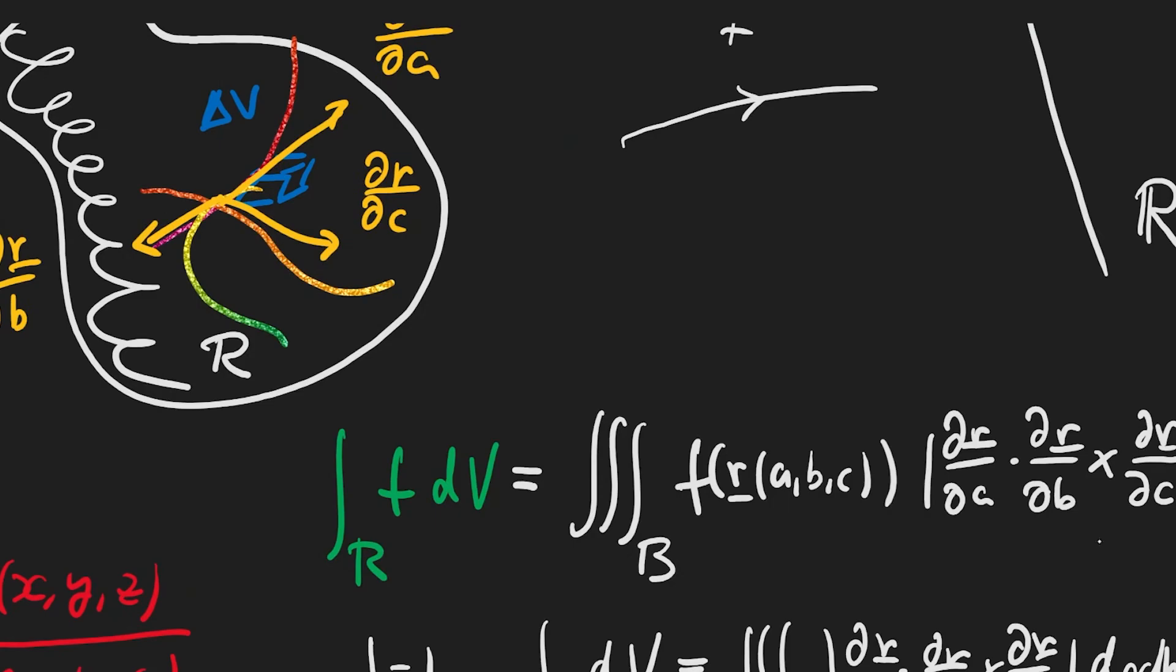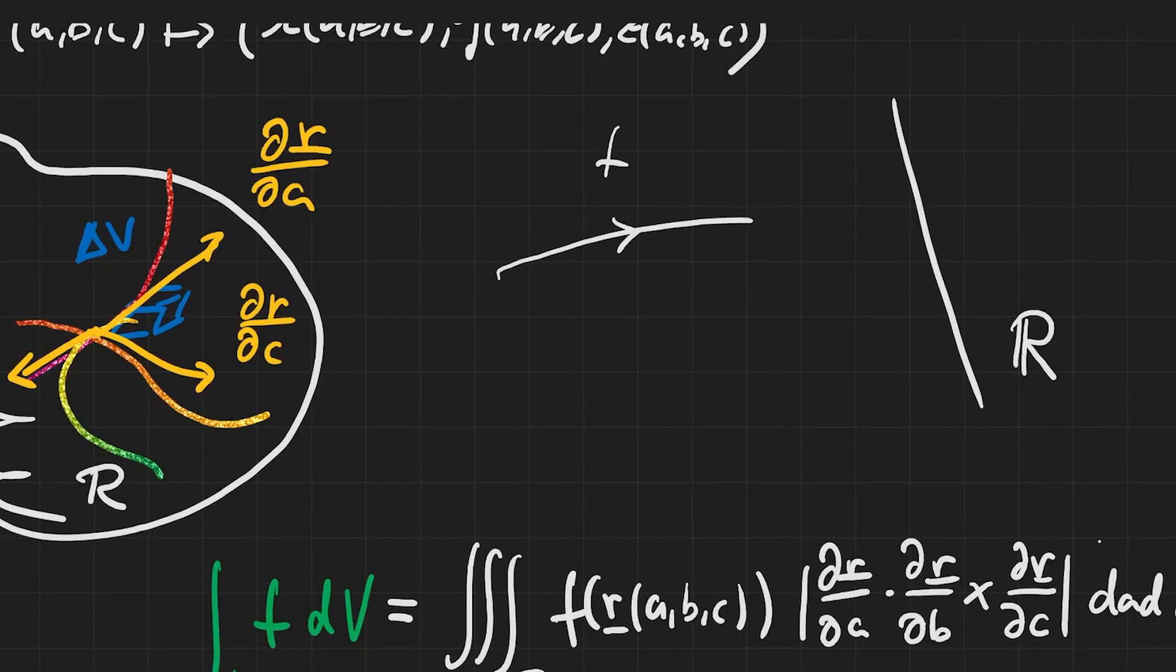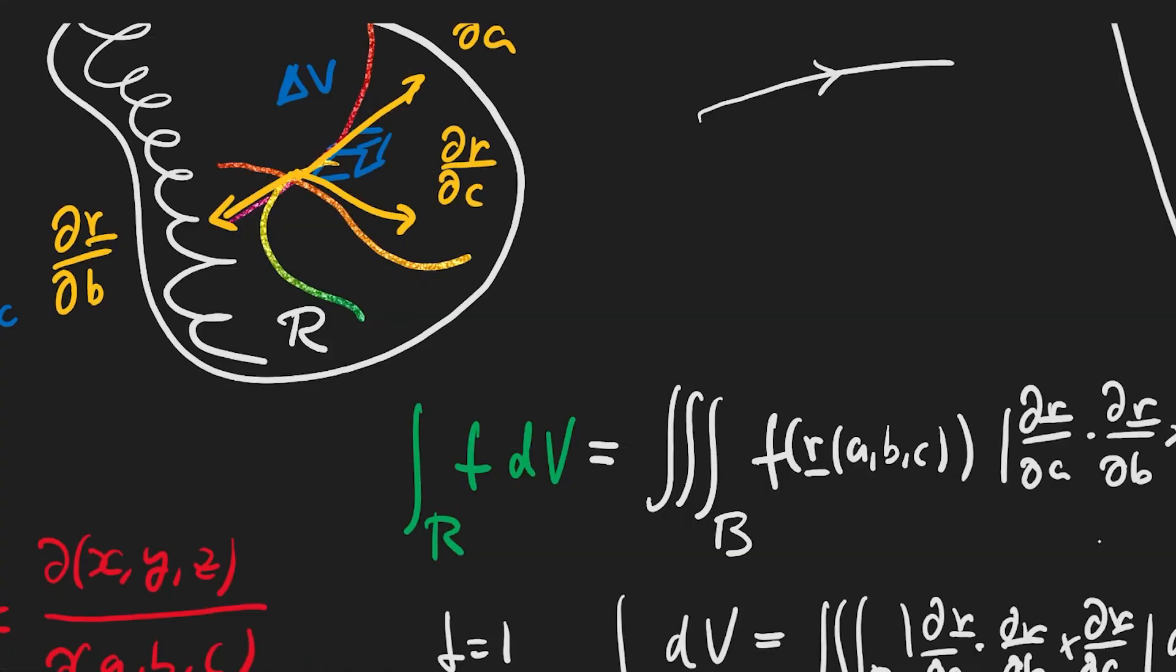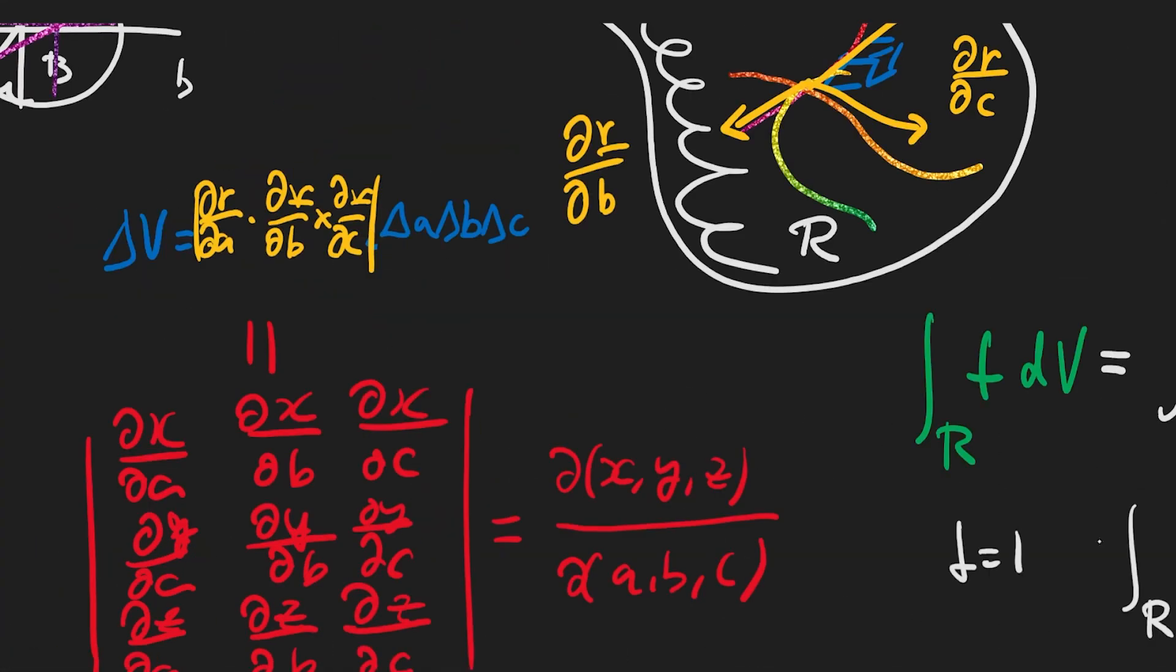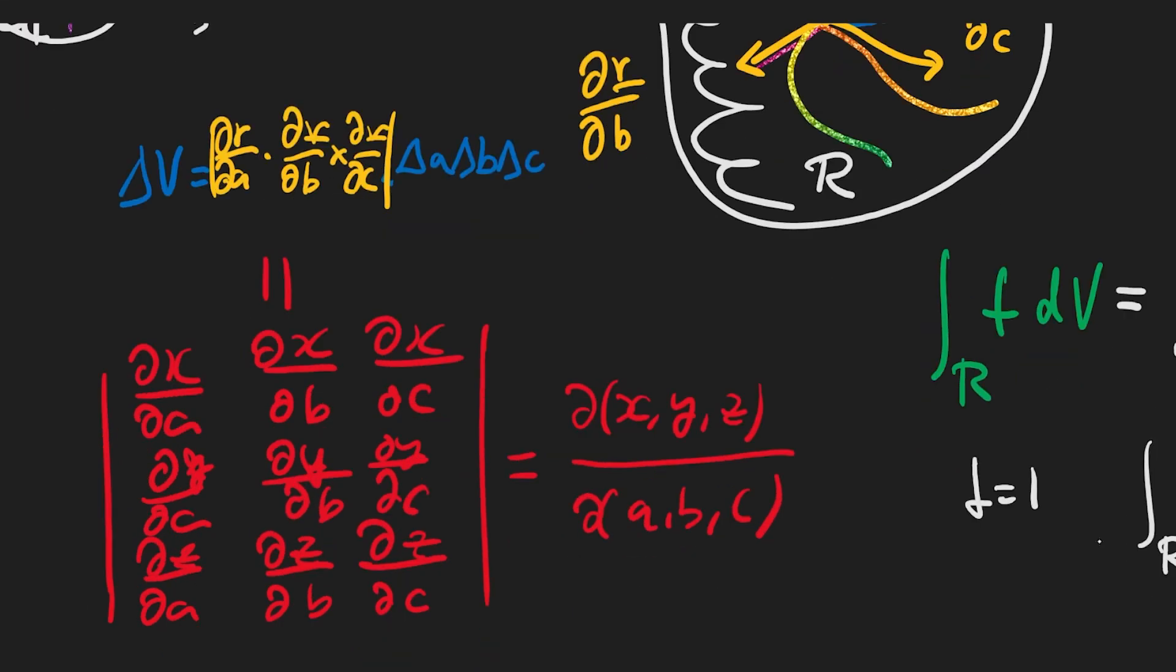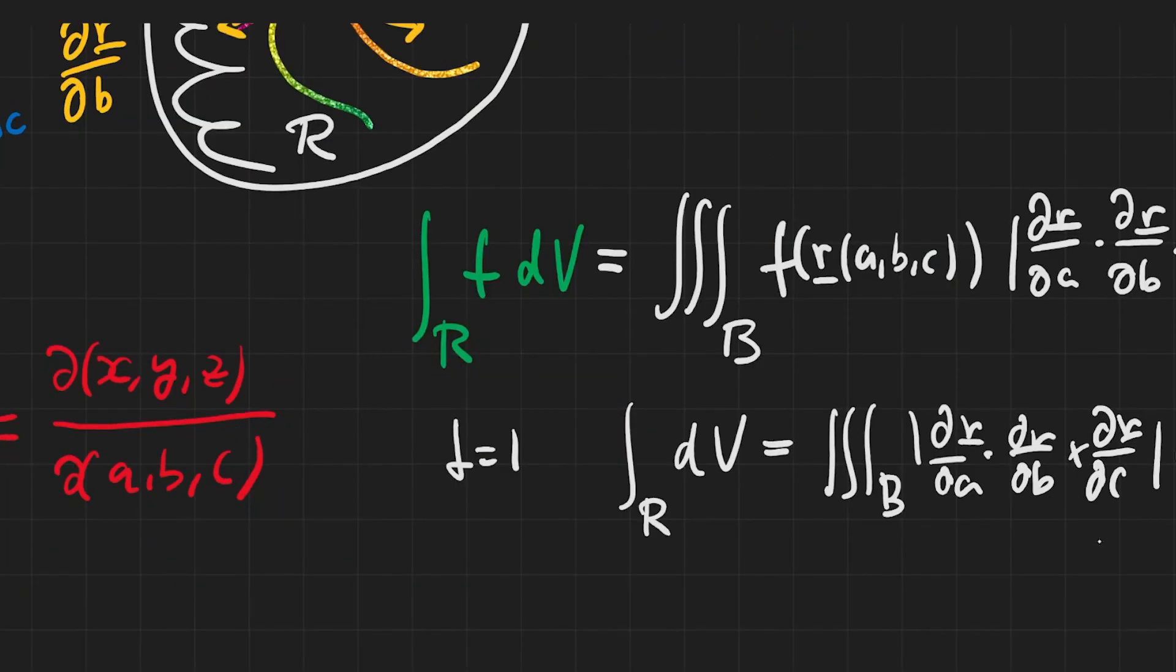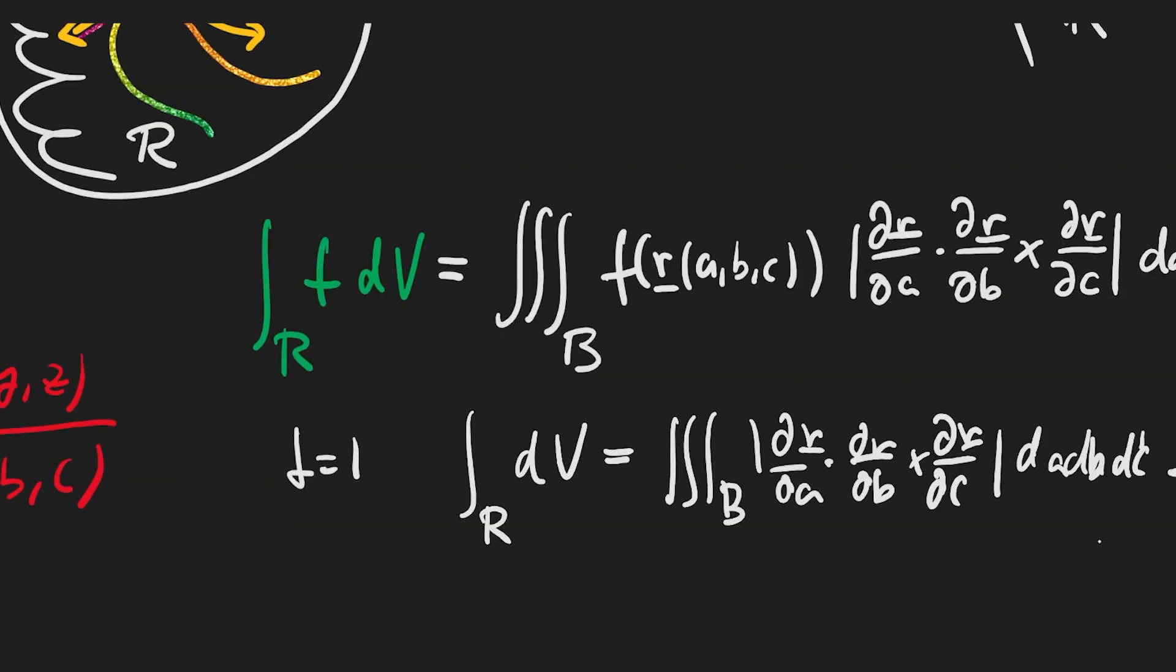So indeed, when this is a faithful parameterization that amounts to this being a coordinate change over the region R, and therefore, it's easy to see that the determinant will never be zero, and therefore, it will be the right factor to include to describe the integral, to go from an integral over a, b space to go to an integral over x, y, z space.